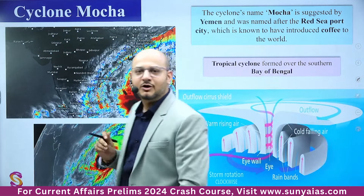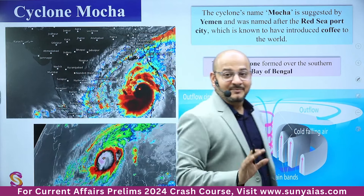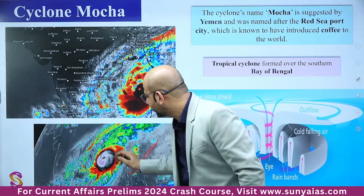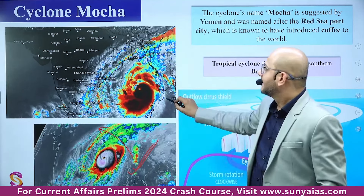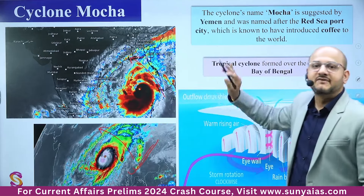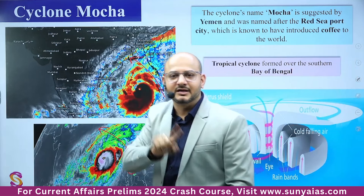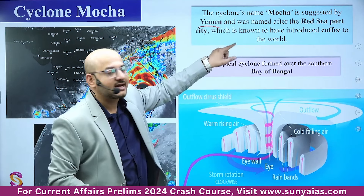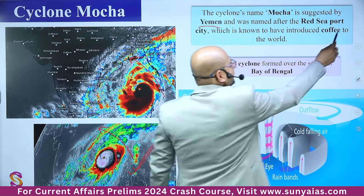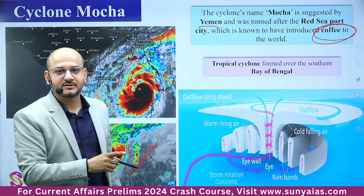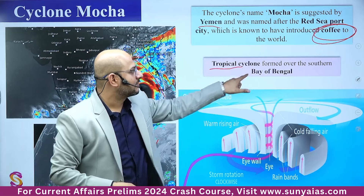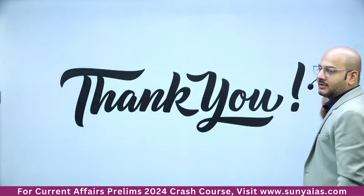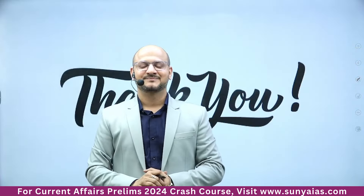Cyclone Mocha is the next topic. It was a tropical cyclone formed over the southern Bay of Bengal. Its name was suggested by Yemen and named after the Red Sea port city also known for having introduced coffee to the world. For match-the-column questions, remember: Cyclone Mocha formed in the Bay of Bengal and was named by Yemen. Thank you — let's meet in another lecture. Keep revising.